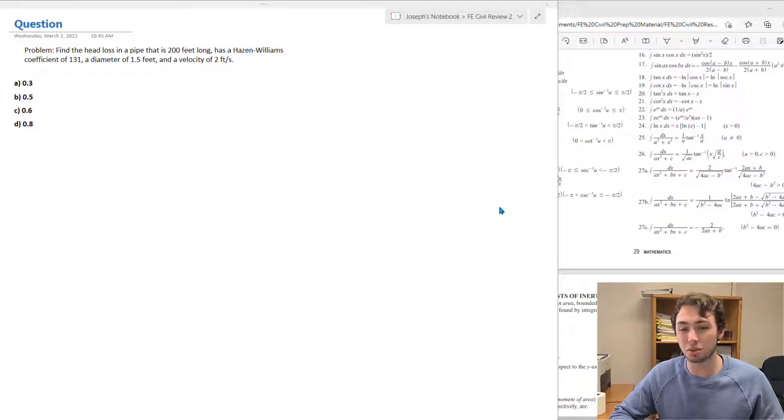Here's the problem: find the head loss in a pipe that is 200 feet long, has a Hazen-Williams coefficient of 131, a diameter of one and a half feet, and a velocity of two feet per second.